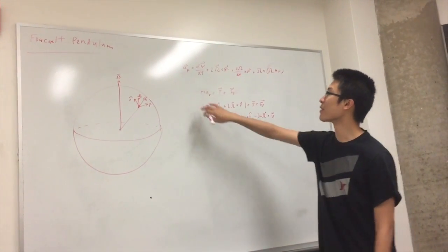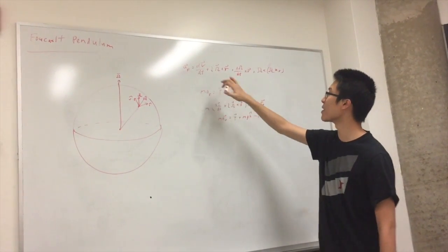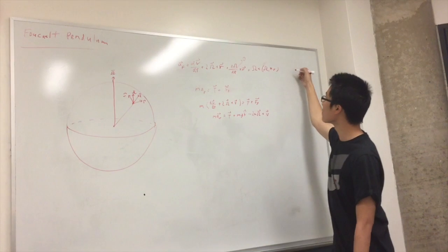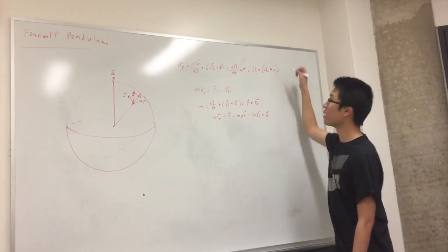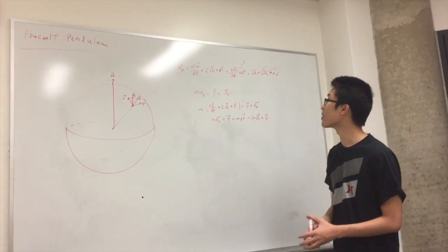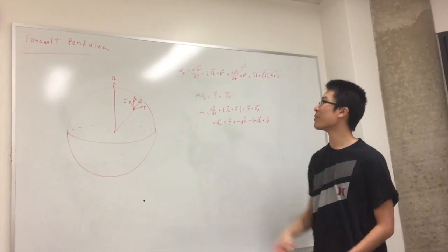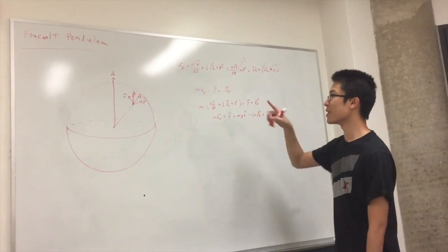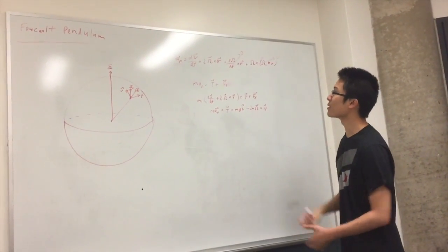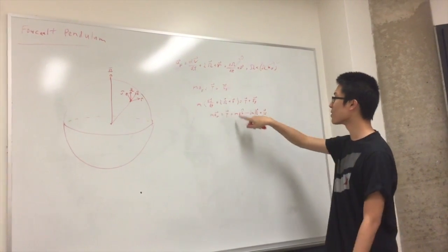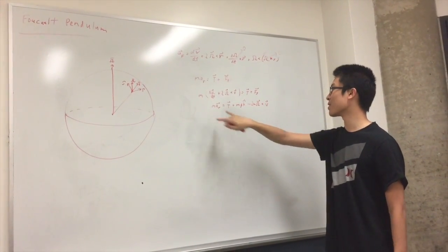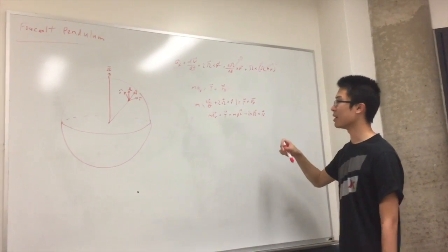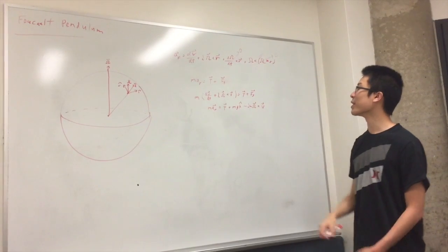From the equation we have in class, the acceleration for the fixed reference frame is all of this. We can ignore the dω/dt because we're assuming fixed rotation, and we can also ignore the centrifugal force because it's pretty negligible compared to the rest of the forces. We also know from Newton's second law that mass times acceleration is T plus the force of gravity, because we have the tension pulling up and gravity pointing down. So we set these two equations together and get m times the acceleration in the rotating reference frame equals T plus mgk, because gravity points in the k-direction, and then we just have minus 2m omega cross v.